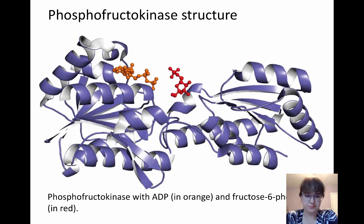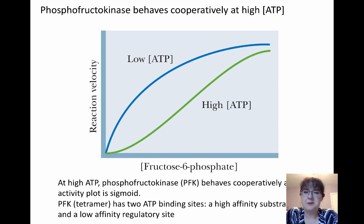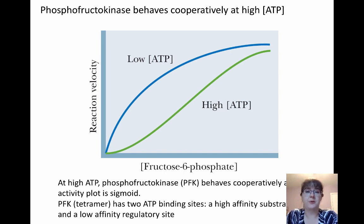Here's our structure. The ADP molecule is in orange and the fructose-6-phosphate is in red. Phosphofructokinase is going to behave cooperatively at high levels of ATP. When we do have cooperativity, remember this is actually going to have our enzyme not work as well. Having ATP introduces that sigmoidal shape to the curve, which causes phosphofructokinase not to work as well. In low ATP, you get that hyperbolic curve where things are activated and working in a highly active manner.